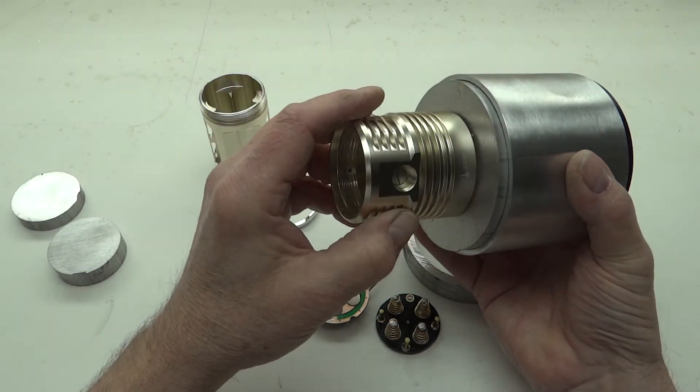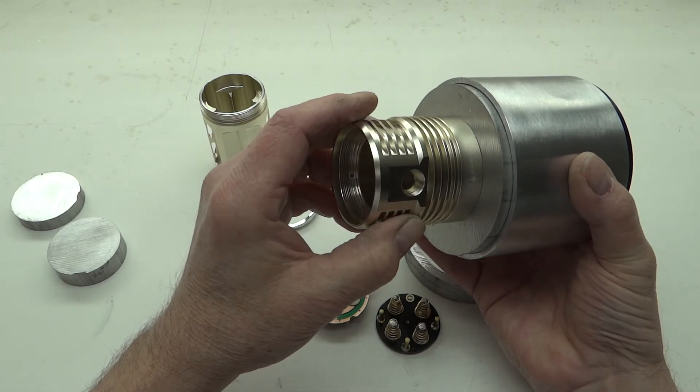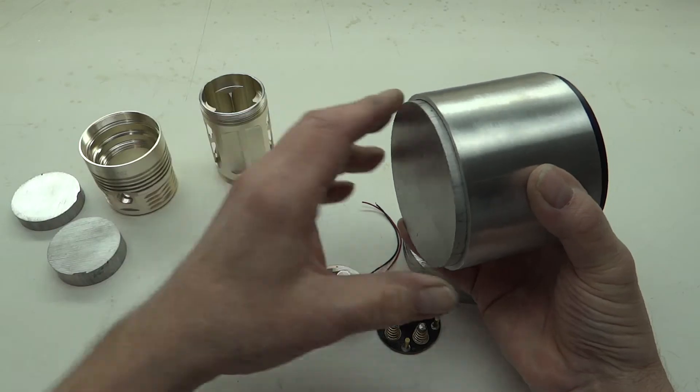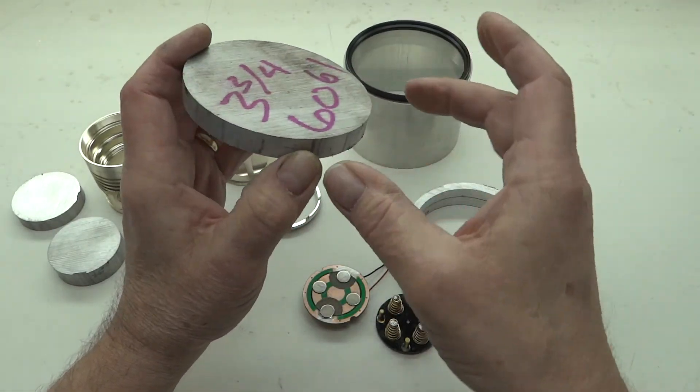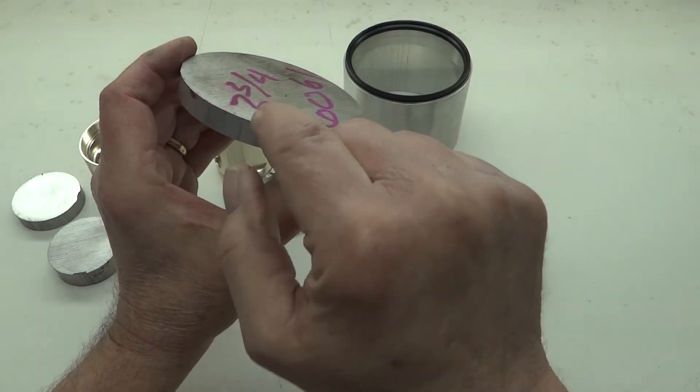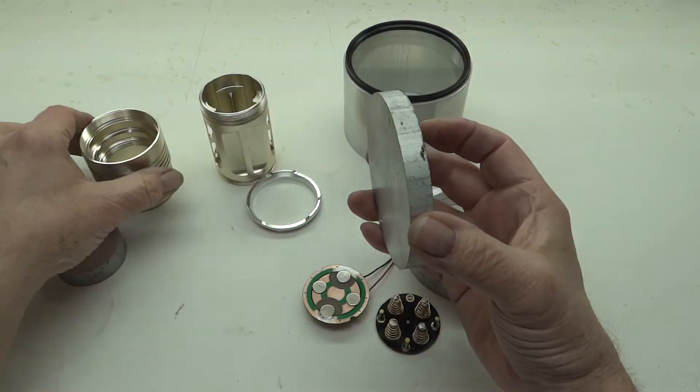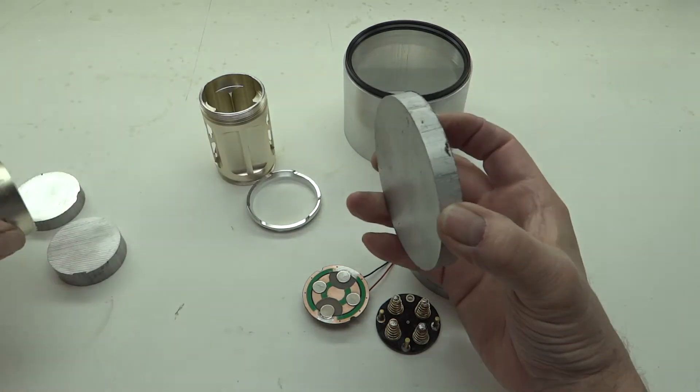And I'll mill a hole in the center here so that the head goes in. And then I'll drill probably three or four spots. I'll drill straight through and tap.